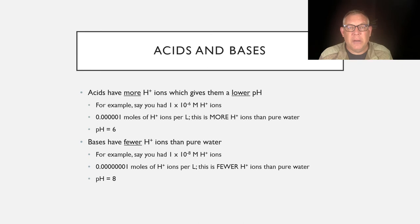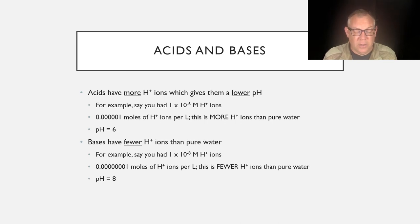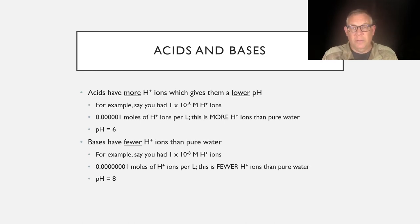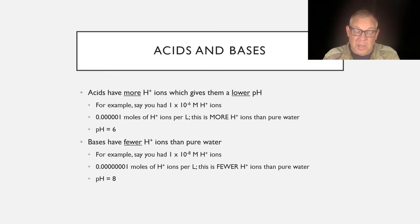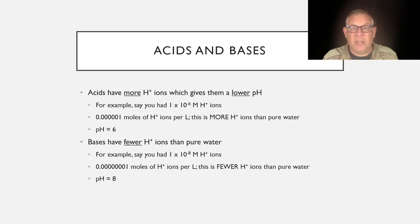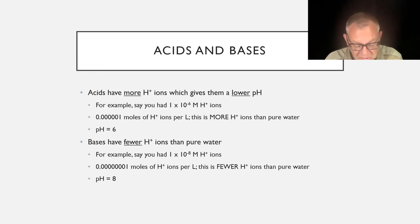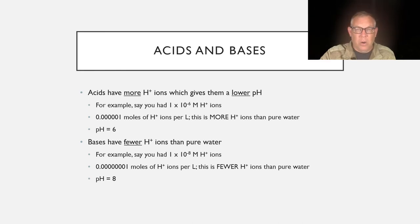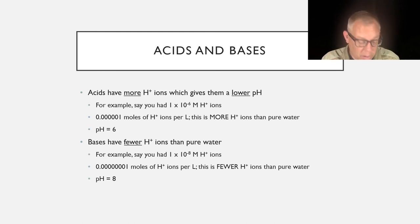Bases have fewer hydrogen ions than pure water. Say you had 1 × 10⁻⁸ moles per liter of hydrogen ions — that's less than water, so it would be a base with a pH of 8. The important thing: acids have more hydrogen ions and their pH is lower; bases have fewer hydrogen ions and their pH is higher, relative to water which is neutral at 7. Also, from the formula, this is a base-10 logarithmic scale, so each one unit change in pH is actually a 10-times change in the concentration of hydrogen ions.